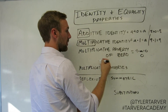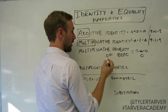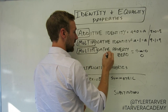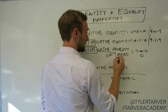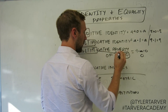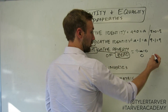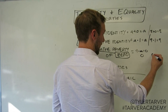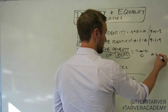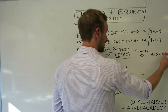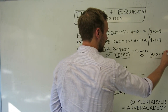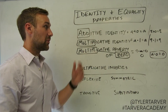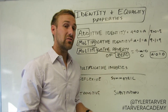So the multiplicative property of zero — just remember: multiply by zero, and that equals zero. Like a times zero equals zero. And that's the multiplicative property of zero.